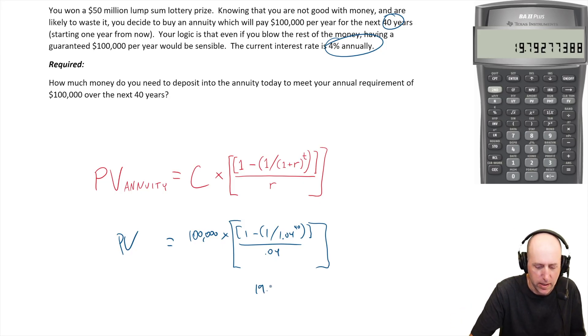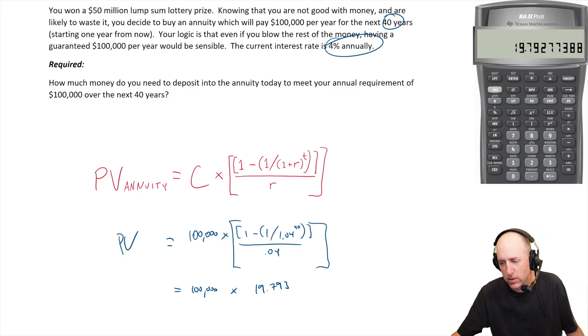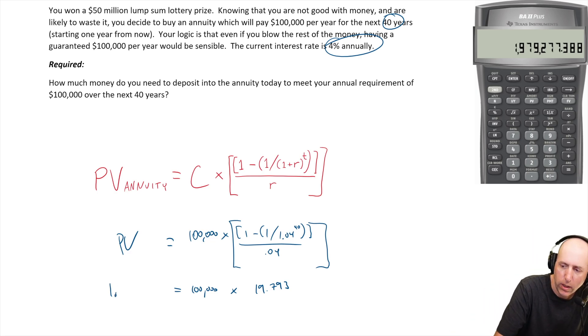19.793 is the annuity factor here. So I'm going to go 100,000 times 19.793, and that's going to give me my answer. I just multiply that number by 100K, and I get 1.979277.